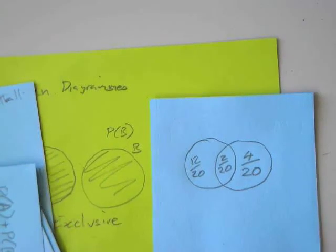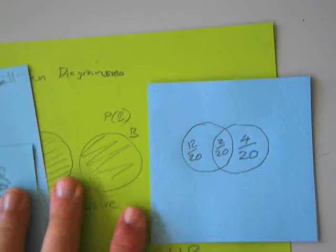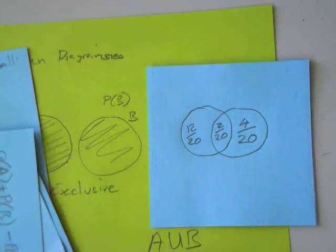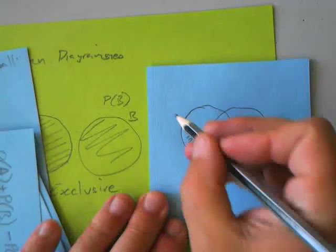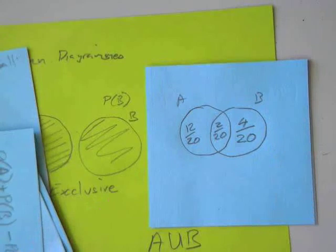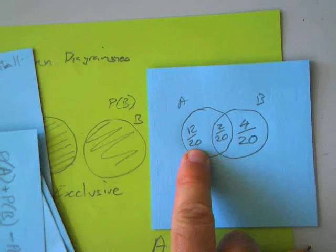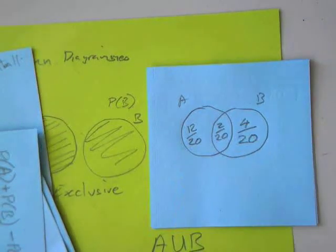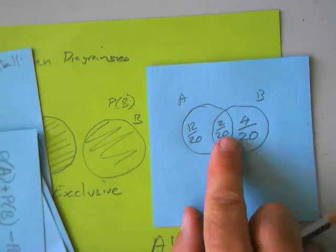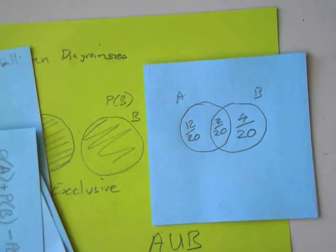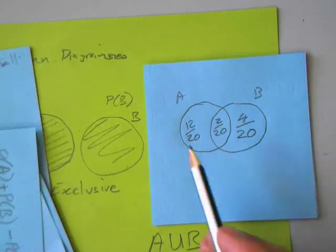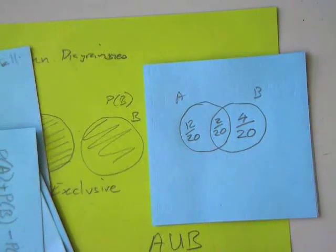First of all, here's my question: how many people were in my group? 20. So, how many people play rugby but not netball? 12 — because that's that bit. Rugby but not netball. How many people play both rugby and netball? 2 out of 20. How many people play rugby or netball but not both? 12 plus 4 is 16.